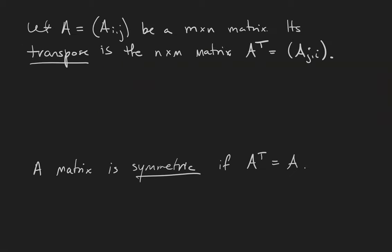Let A be the n by n matrix of bits Aij. Its transpose is the n by m matrix A T of bits Aji, where the swapping of the indices represents the fact that we're interchanging the rows and columns.